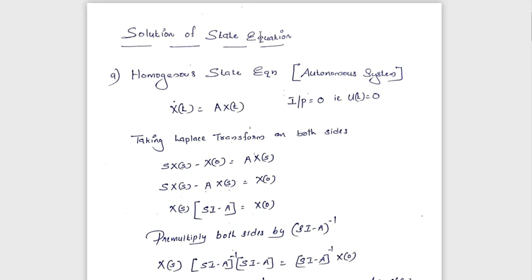We are going to find the solution of the state equation. Solution means we are going to find x(t) from x-dot(t), or finding the response of the system. We are considering the homogeneous state equation, that is input equal to zero, u(t) = 0, so the state equation becomes x-dot(t) = A·x(t).